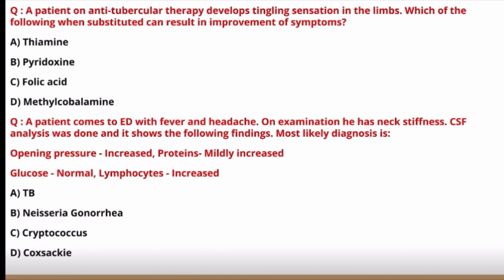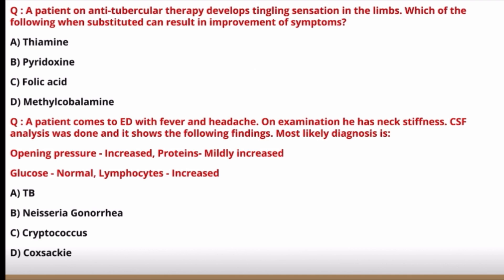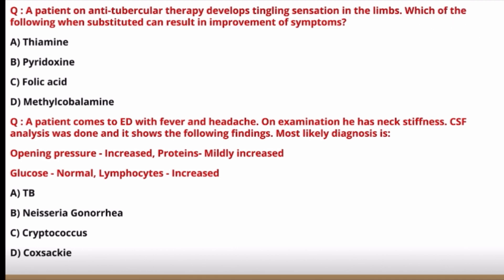A patient on anti-tubercular therapy develops tingling sensation in the limbs. Which drug when substituted results in improvement? Options: thiamine, pyridoxin, folic acid, methylcobalamin. Among ATT drugs, isoniazid causes this because it blocks pyridoxin, a cofactor in conversion of glutamate to GABA. With pyridoxin blocked, glutamate is not converted to GABA, causing tingling. Substituting with pyridoxin (vitamin B6) results in improvement. The correct answer is pyridoxin.